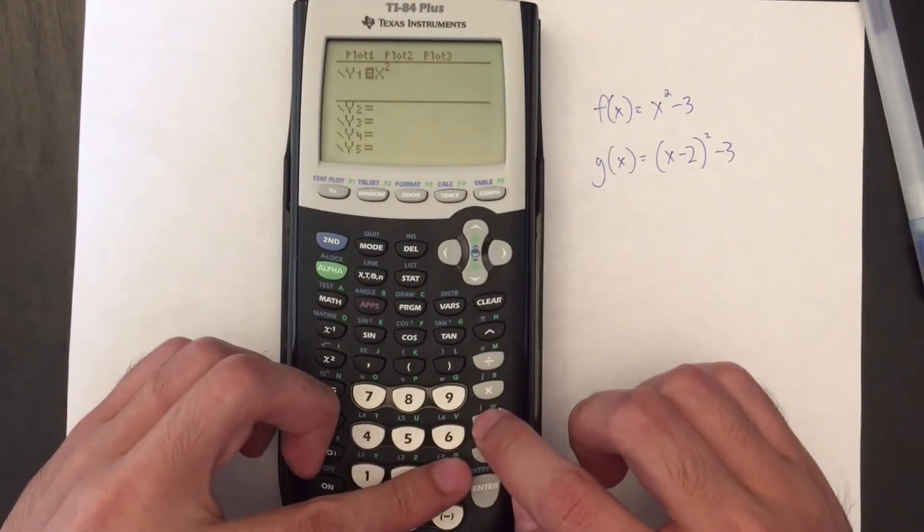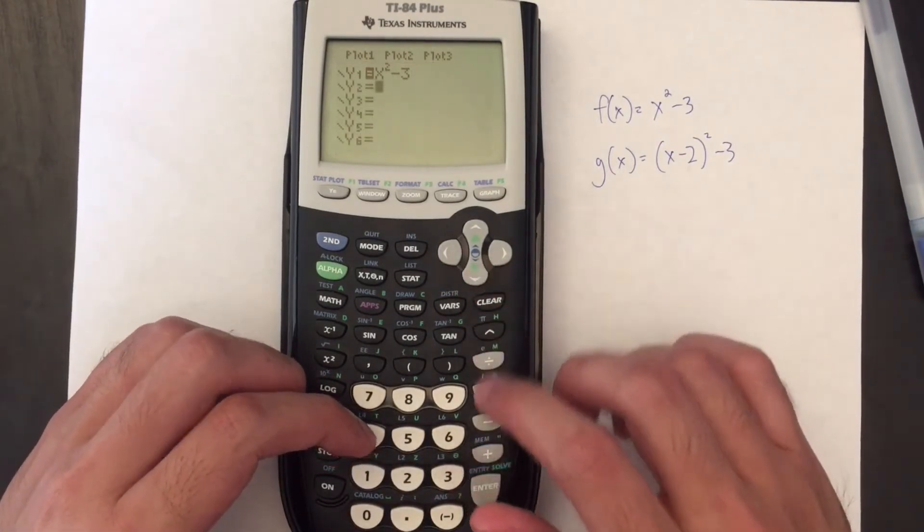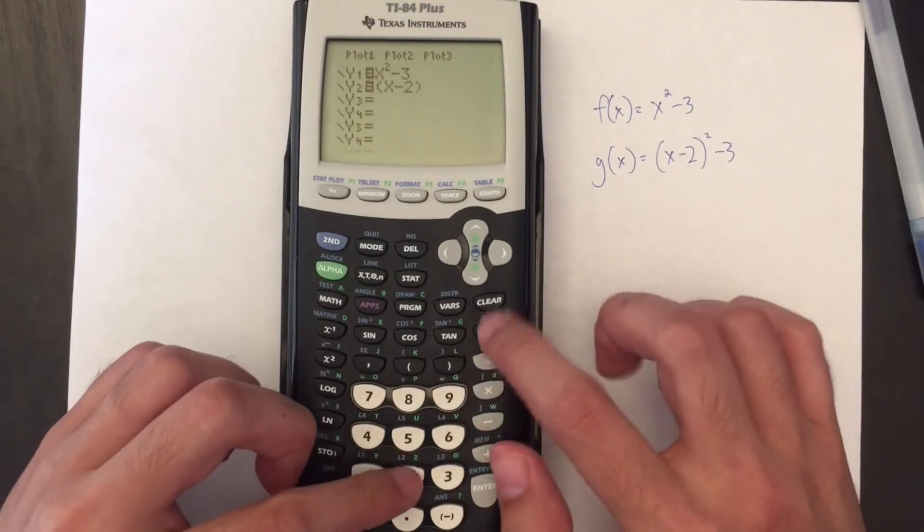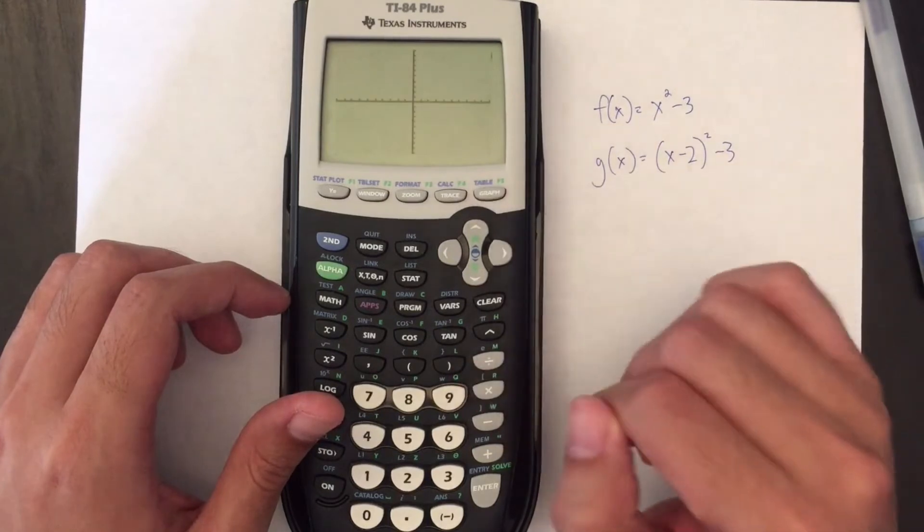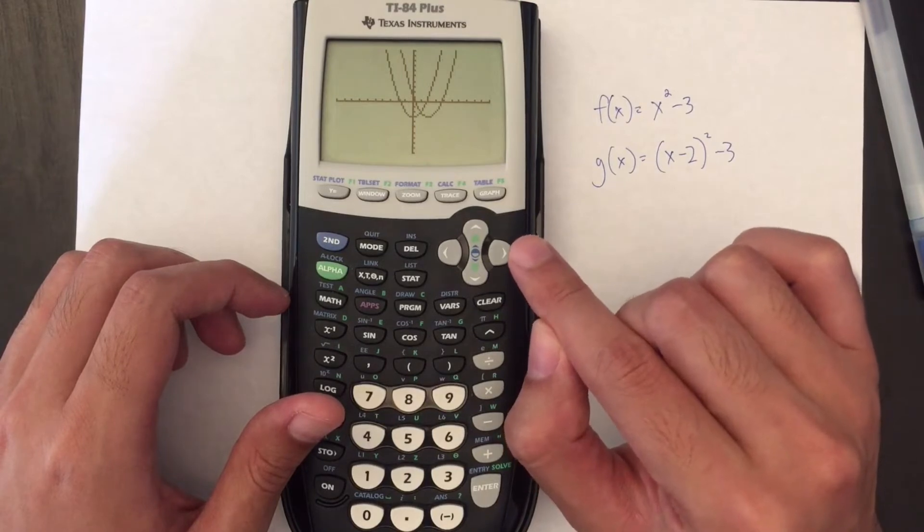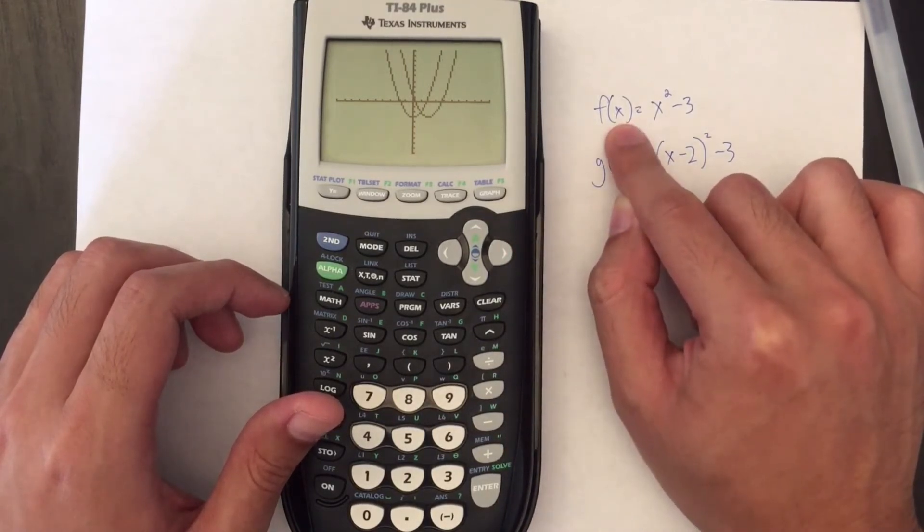So my first equation will be x² - 3 and my second equation will be (x - 2)² - 3, which is g(x). And when I graph these, I should see two parabolas. And so what I can do is sort of estimate where g(x) is in relation to f(x).